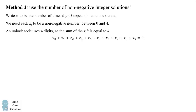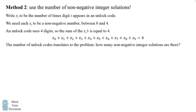This equation — x sub 0 through x sub 9 summing to 4 — holds for any valid unlock code. So the number of unlock codes translates to counting the non-negative integer solutions to this equation. Though it may seem like we've made the problem harder, there is a clever general method to count these solutions. It is known as stars and bars.